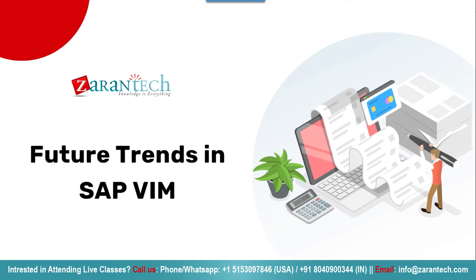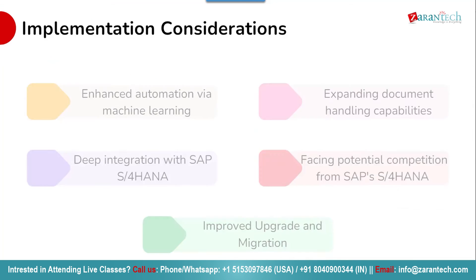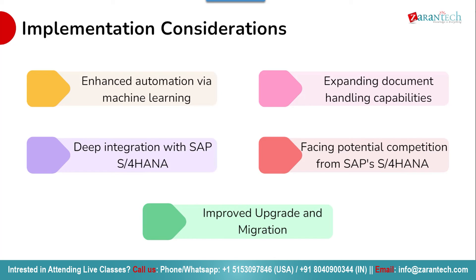Finally, we will look at the future trends in SAP VIM. SAP VIM is poised for exciting developments and enhancements. The solution is expected to leverage machine learning to drive even greater automation capabilities. Deep integration with SAP S/4HANA will continue to be a focus, enabling organizations to fully leverage their next-generation ERP systems. SAP VIM will also expand its document handling capabilities, supporting a wider range of invoice formats and scenarios, and will offer improved upgrade and migration paths for customers.